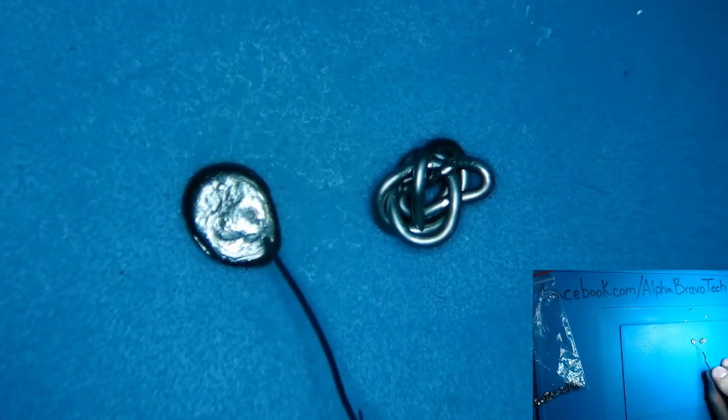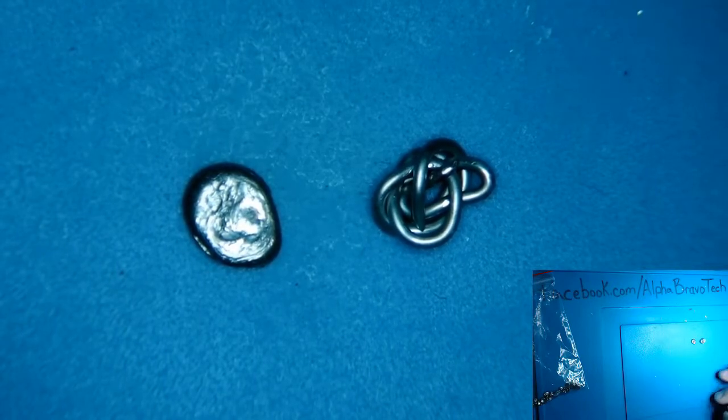This is Rose's Metal. It's a low melt solder. It's kind of like chip quick. It's what I use instead of the chip quick.